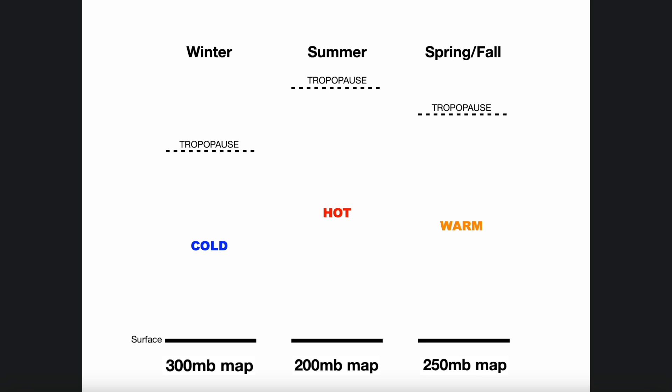Now let's say you're forecasting a summertime severe weather event, but you only have a 300 millibar map to work with. Not to worry, in most cases any of these maps will work just fine, but just know that there is a difference in which maps are best to use based on time of year. For the remainder of this video, I'll be referring to the 300, 250, and 200 millibar maps as the upper tropospheric map, for simplicity's sake, but know that whatever I'm discussing does apply to each map just the same.